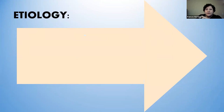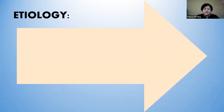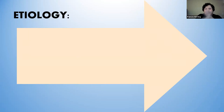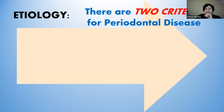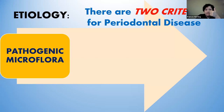Now, why is it important to understand why we need to detect the biofilm? I graduated in 1984, and we were trained it's the calculus — make sure you remove all calculus deposits, use your Graceys and Columbias, get the glass-like surface. That was back then. Now we know it's not that. We really need to pay attention to the biofilm. There are two criteria for periodontal disease: you need pathogenic microflora, and you need a susceptible host.